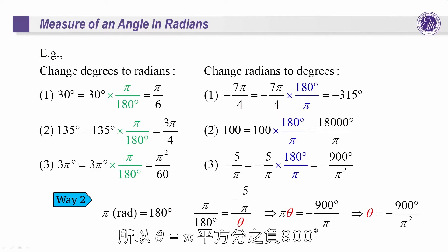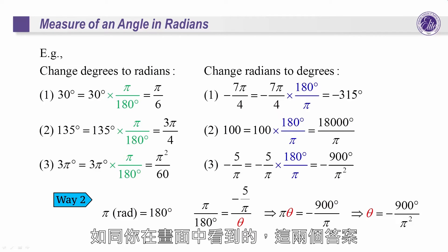Therefore, theta is minus 900 degrees over pi squared. As you can see, these two answers are the same.